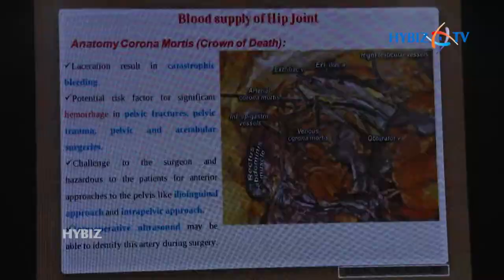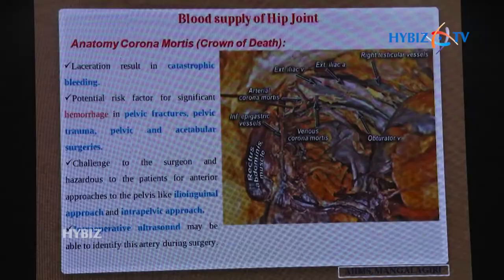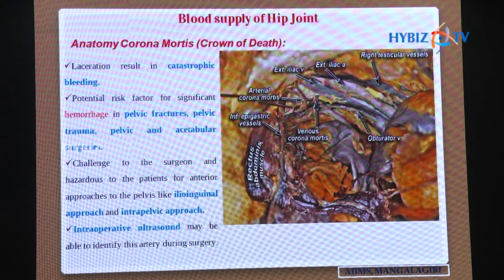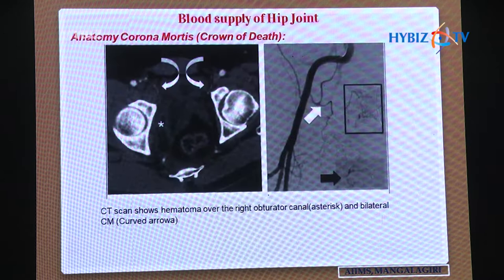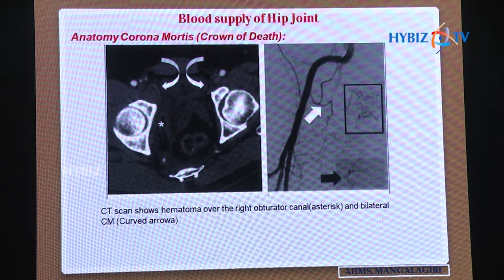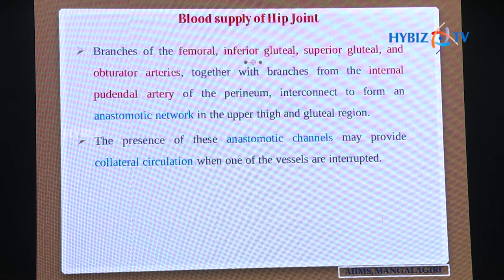Laceration of the corona mortis may result in catastrophic bleeding. It is a significant risk factor for hemorrhage in pelvic fractures, pelvic trauma, and acetabular surgeries. It poses a challenge in anterior approaches to the pelvis such as the ilioinguinal and intrapelvic approaches. Intraoperative ultrasound may identify this artery during surgery. CT imaging shows the corona mortis anatomy, with the asterisk marking a hematoma over the right obturator canal and bilateral corona mortis above the pubic bone. Branches of the femoral, inferior gluteal, superior gluteal, obturator, and internal pudendal arteries interconnect to form an anastomotic network in the upper thigh and gluteal region.